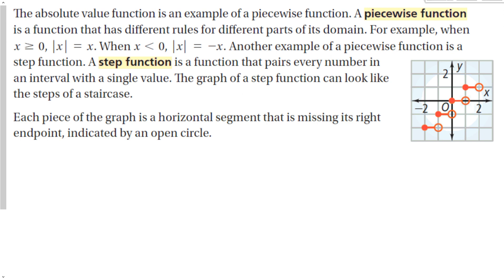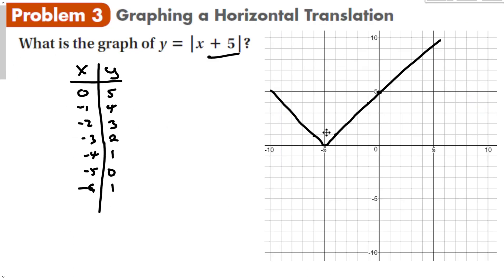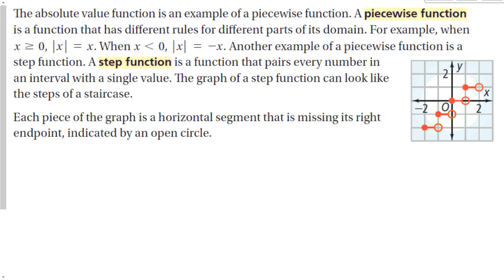The absolute value function is an example of something called a piecewise function — a function that has different rules for different parts of its domain. The rules for the left part and the right part are different: the right part looks like a line going up, and the left part looks like a line going down. Basically, what we did was take the part of the line that would have been negative and made it positive, which is what the absolute value function actually does. When x is greater than zero, the absolute value of x equals x; when x is less than zero, the absolute value of x equals negative x.